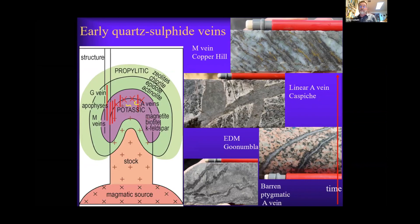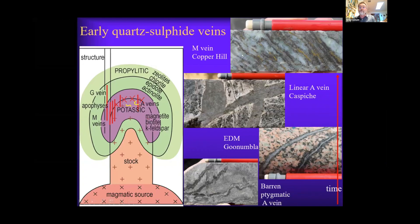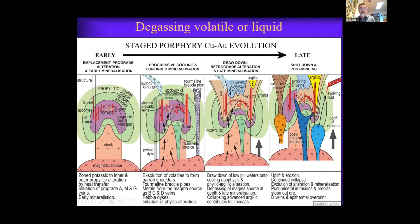Of the paragenetic sequence of evolving porphyry veins, probably the linear A veins host some of the best early mineralisation — here a quartz vein with chalcopyrite, bornite, and a nice K-feldspar selvage. But as we go to the later M veins, we start to see that this chalcopyrite is on the partings between the quartz and the magnetite, because the quartz vein formed early and then the chalcopyrite is coming in later as the magmatic source at depth is starting to release its metals up into the higher level porphyry.